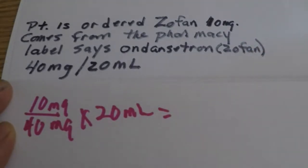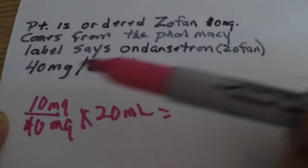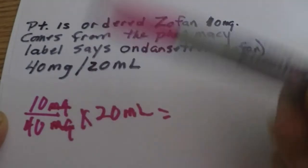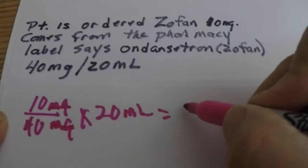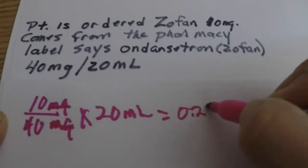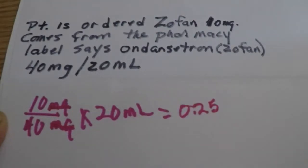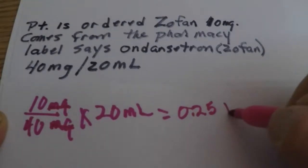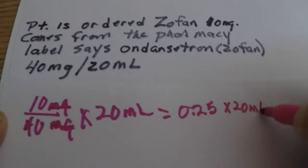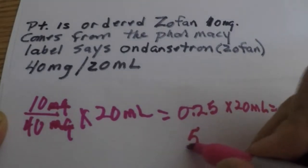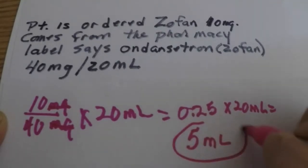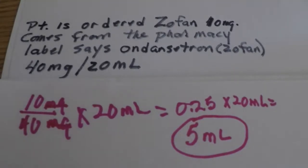Let's do the math. Cancel out milligrams — 10 divided by 40 is 0.25, times 20 ml, and that gives us 5 ml. So we're going to give that patient 5 ml of medication. I hope that helps — that'll get you started.